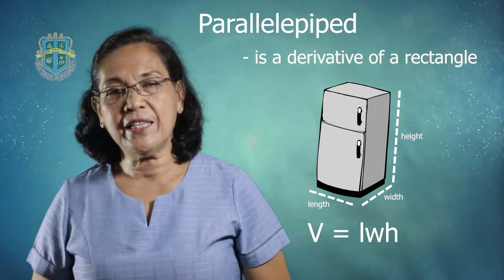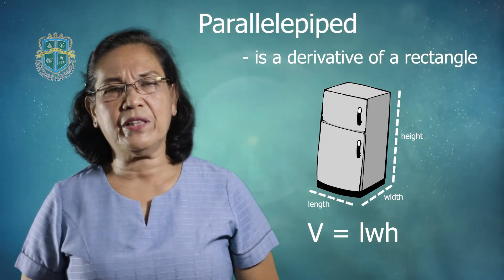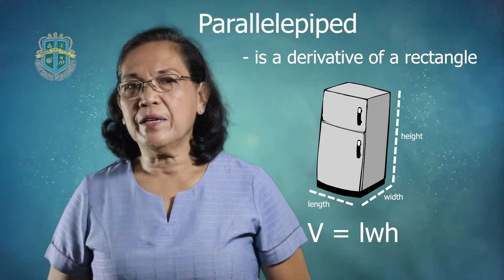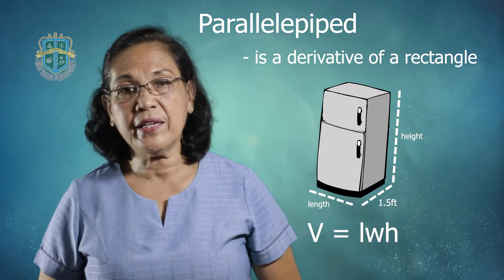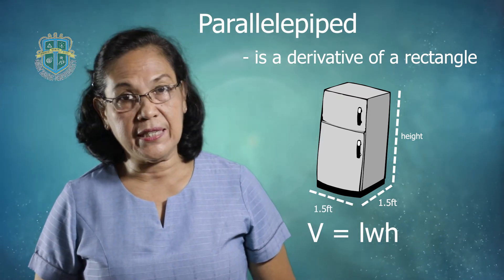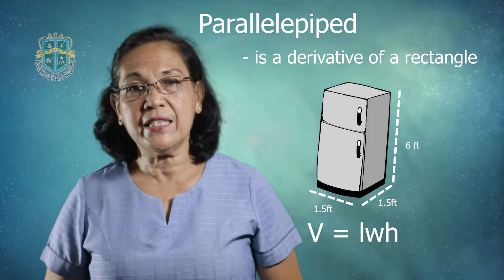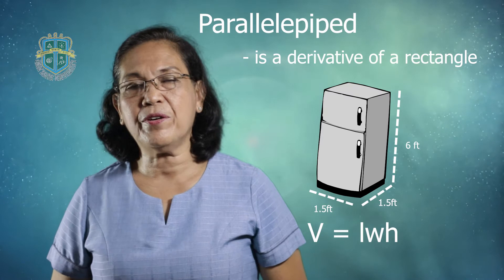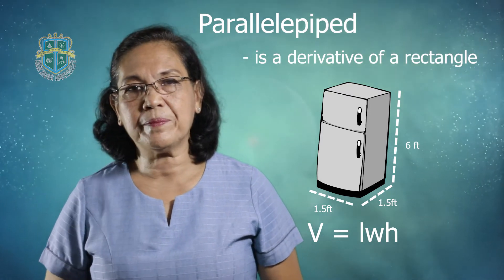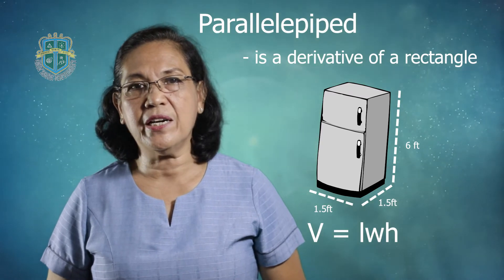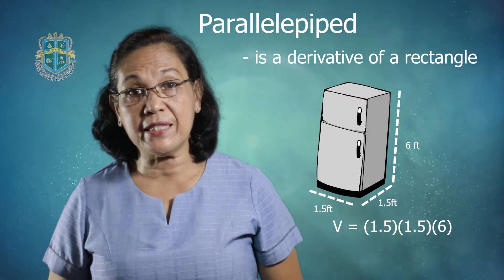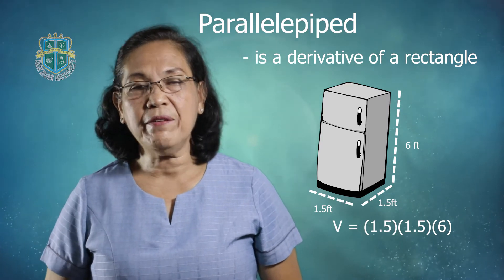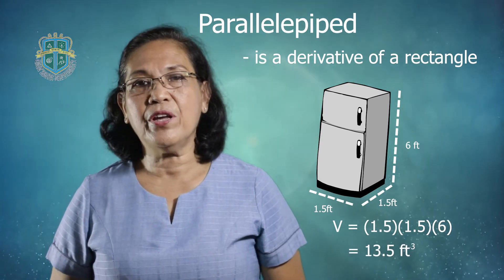Let us imagine the refrigerator, or you can look at your refrigerator right now. Suppose your refrigerator measures 1.5 feet as its width, 1.5 feet as its length, and the height is 6 feet. Using the formula for the volume of a parallelepiped, substitute the values: 1.5 times 1.5 times 6. Multiplying all these factors gives us 13.5 cubic feet.